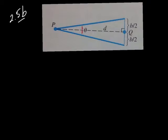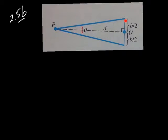The subtense bar has length b — this is the subtense bar right here. If you cut b in half, you get b/2 and b/2. The subtense bar with length b is centered at q and perpendicular to the line of sight between p and q, so this length is perpendicular to pq and q is the center point.